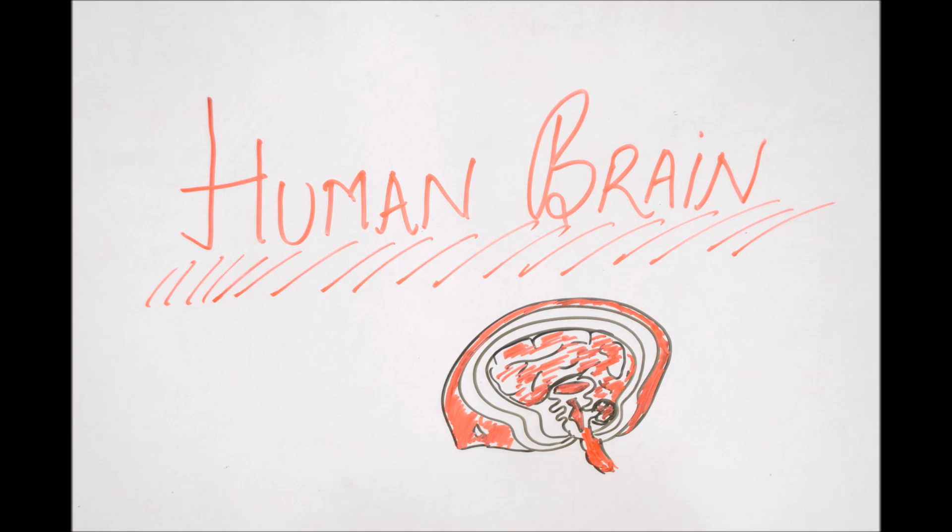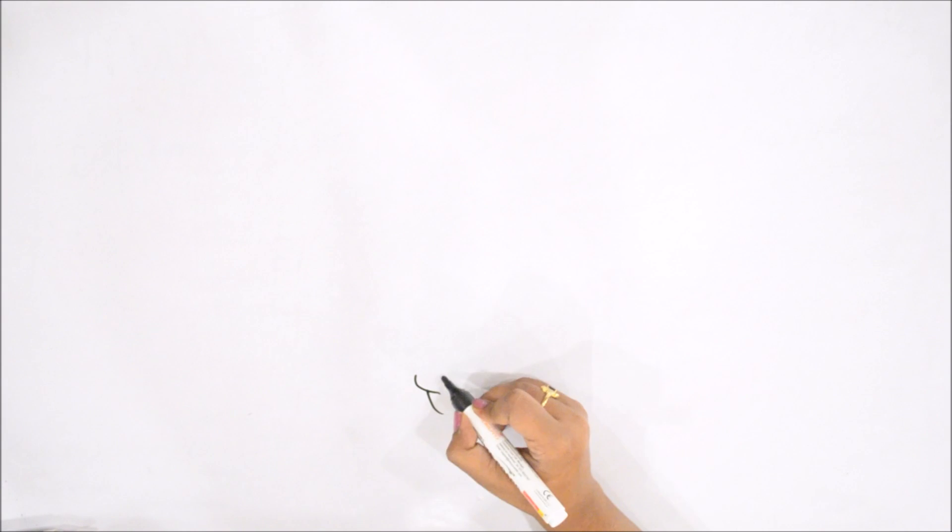Brain has mainly three parts: forebrain, midbrain and hindbrain, and all these parts of brain are specialized to do their respective works. Let's see how we can draw the human brain.